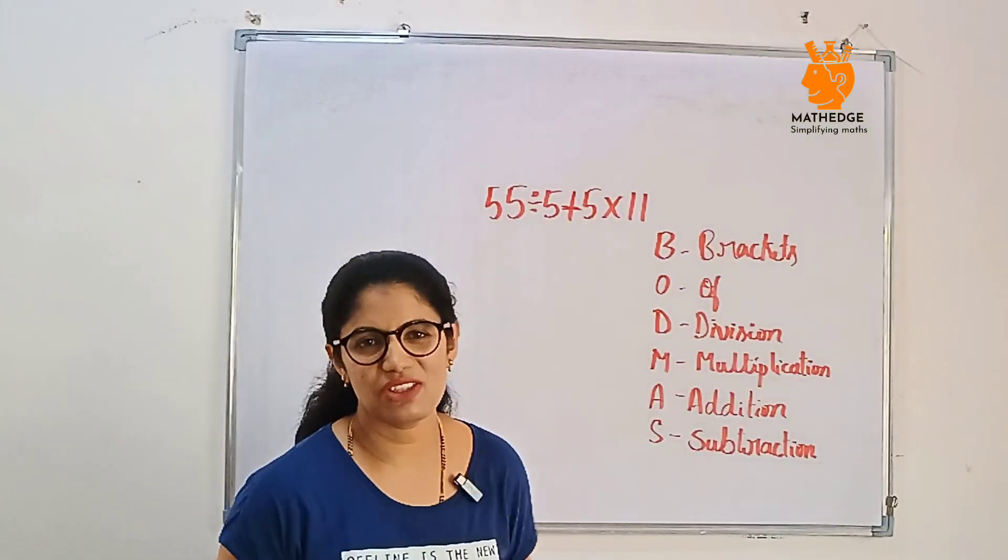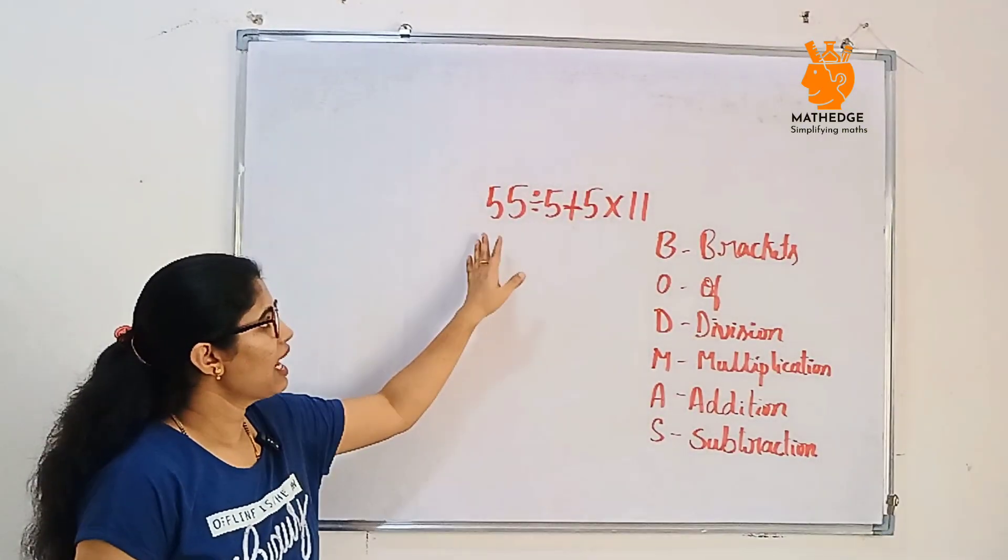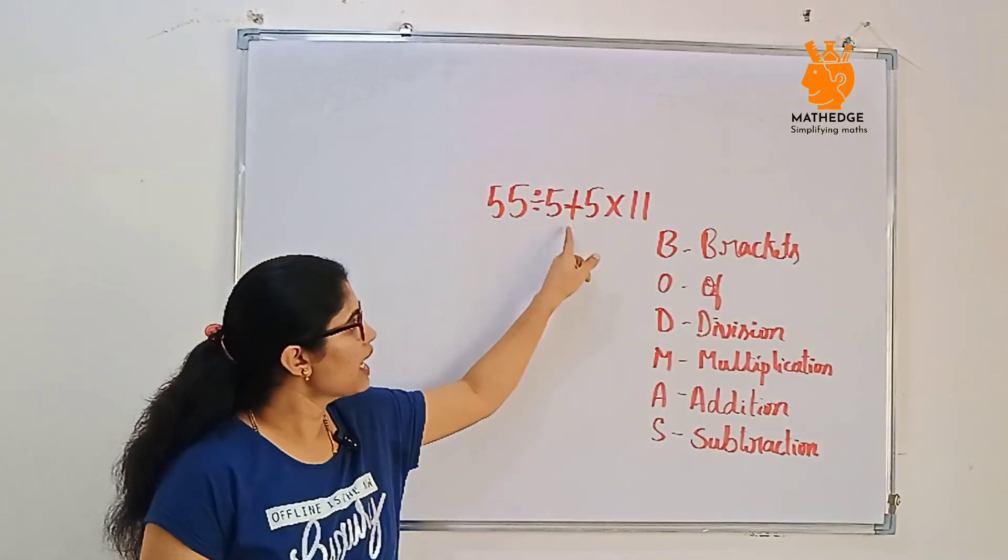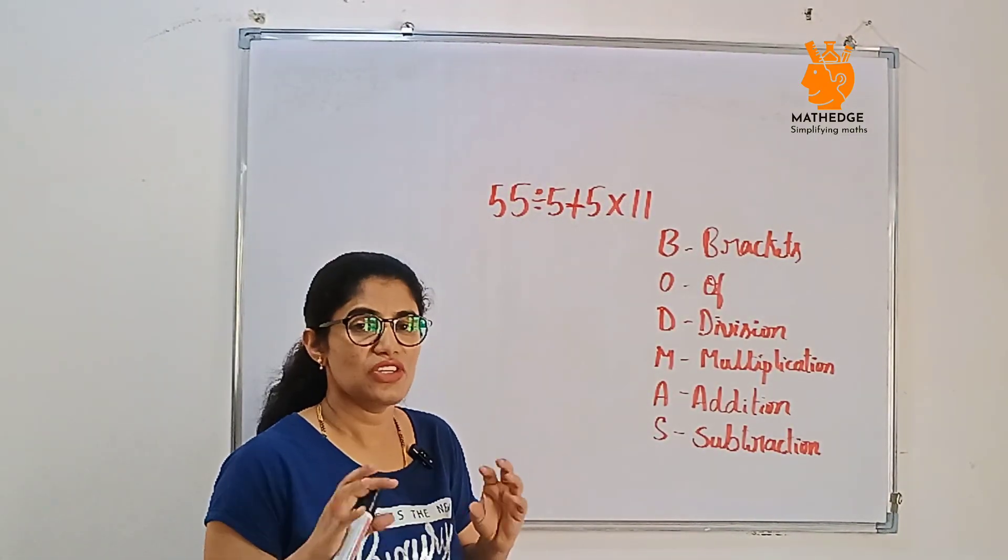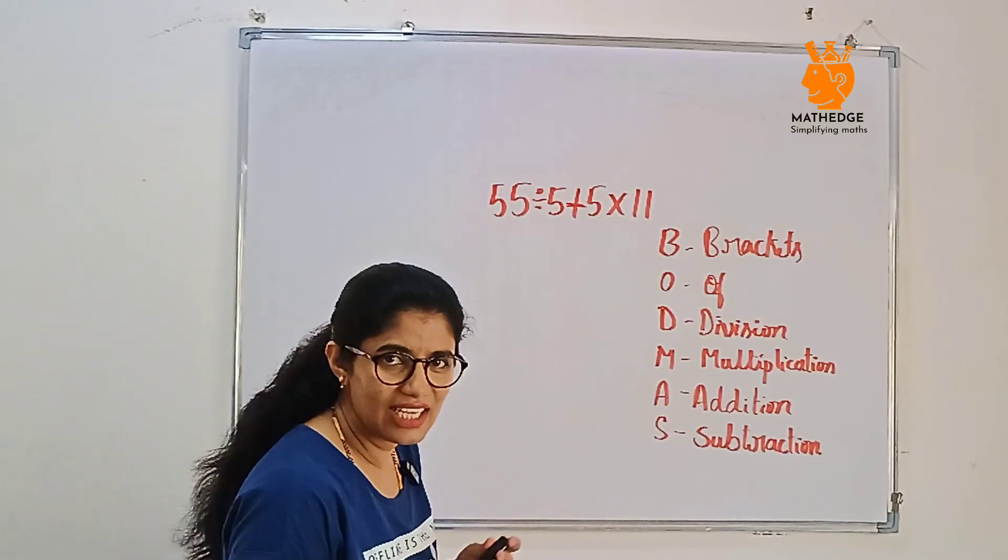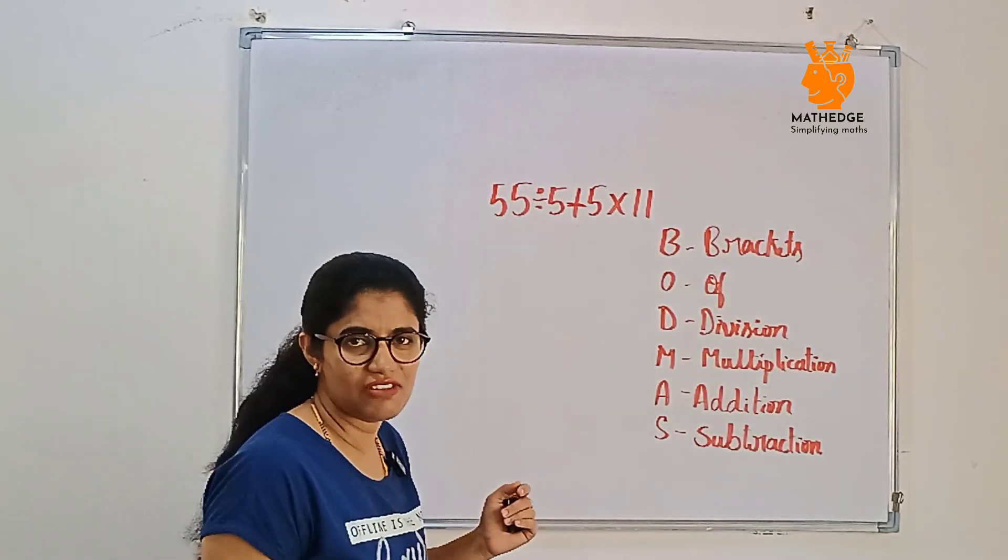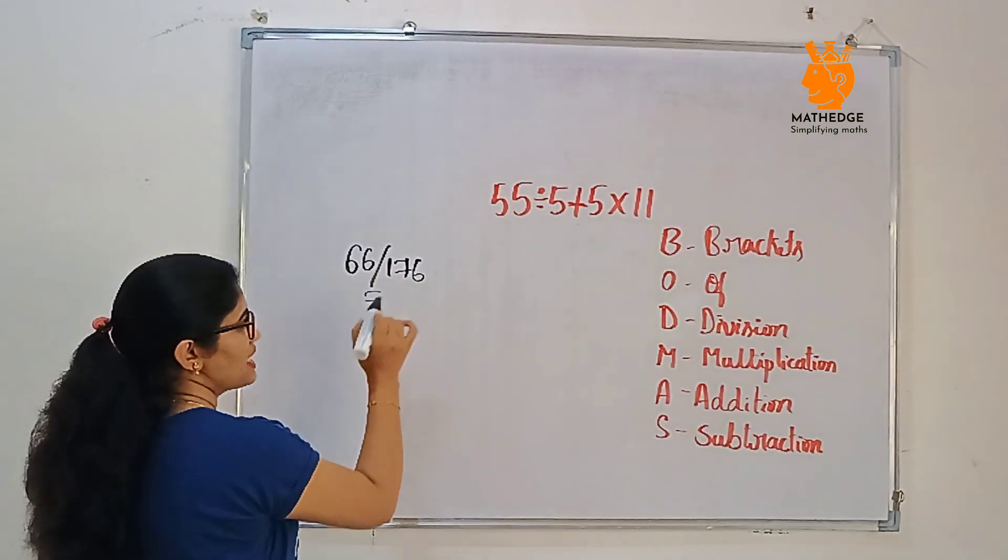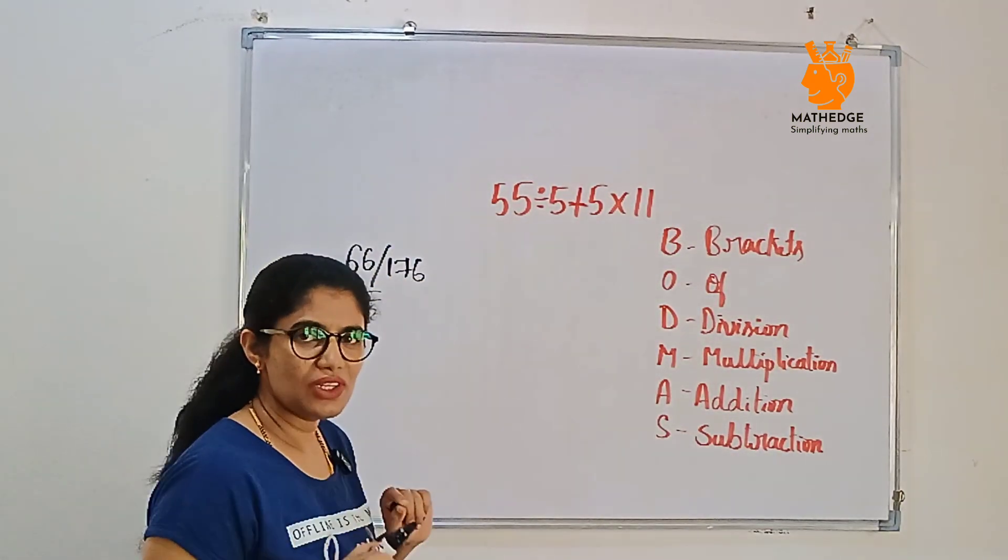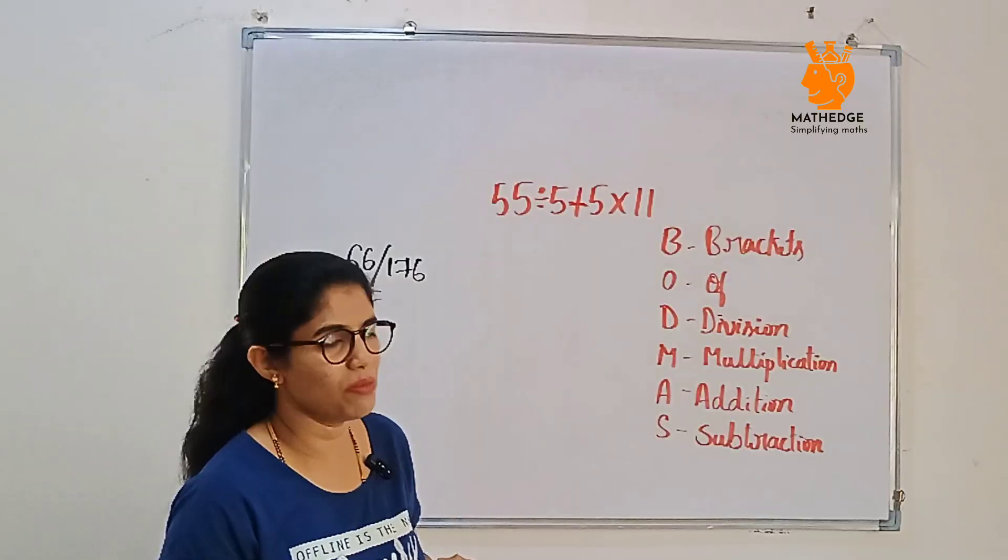Let's solve another viral math problem. Here we have this. We have division, addition, multiplication together. How we can apply the trick? If I ask for you, what you will say the answer? Take 10 seconds and solve it. You will say either 66 or 176. You will be confused with this answer. Let's solve and break it down the problem.